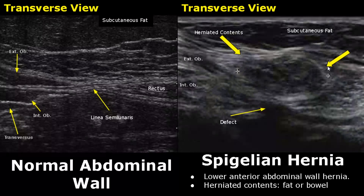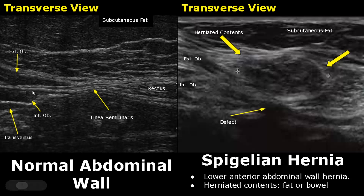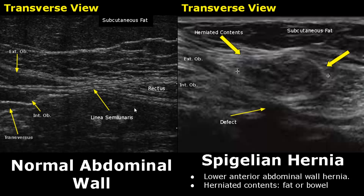The linea semilunaris is found along the lateral edge of the rectus abdominis muscle. It is seen between the external oblique, internal oblique, and transversus muscles and the rectus abdominis. This is the location of the spigelian hernia — it is a lower anterior abdominal wall hernia. The herniated contents can either be fat or bowel.